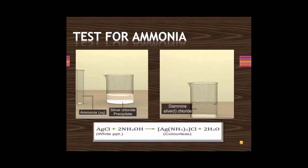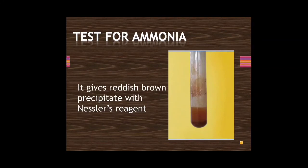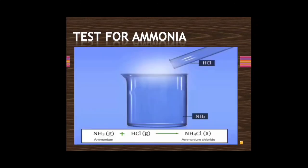Tests for ammonia: when treated with silver chloride solution, it gives a white precipitate of diamine silver chloride. It gives a reddish brown precipitate with Nessler's reagent. With HCl, ammonia gives dense white fumes of ammonium chloride.